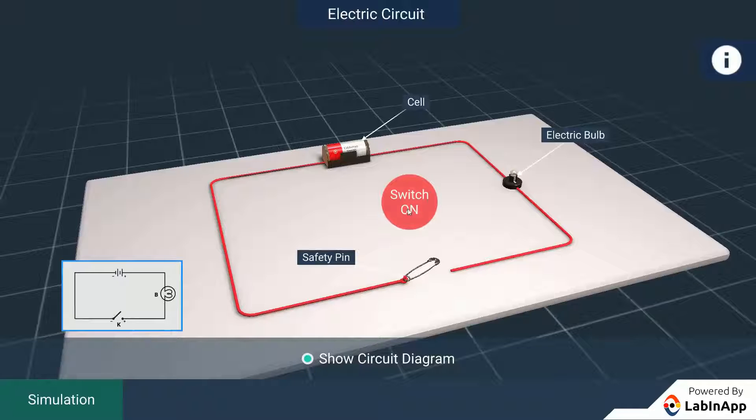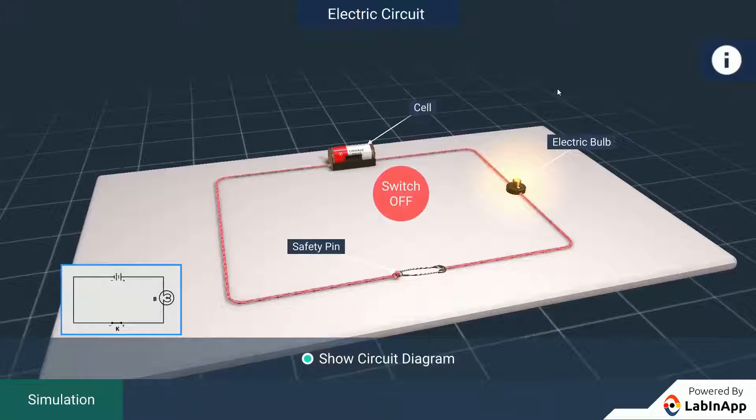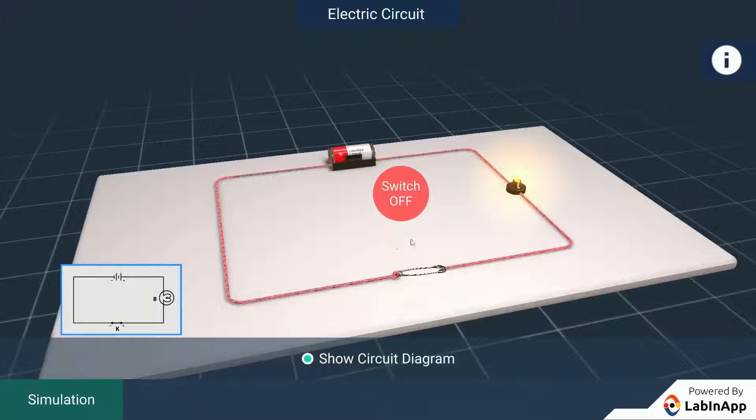Now, switch on to close the circuit. We can see that the current starts to flow in the circuit and bulb glows.